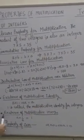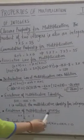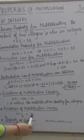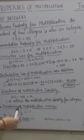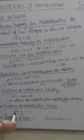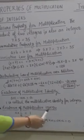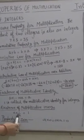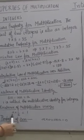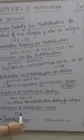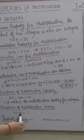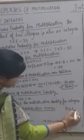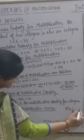The next property is the existence of multiplicative inverse. For any integer A, A × (1/A) = 1. The multiplicative inverse of A is 1/A. For example, the multiplicative inverse of 5 is 1/5, and 5 × (1/5) = 1.